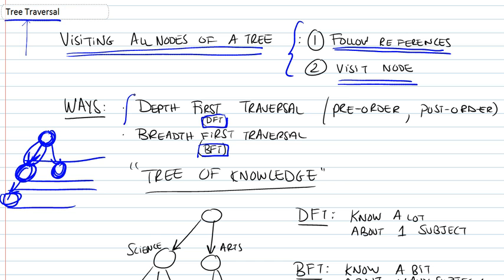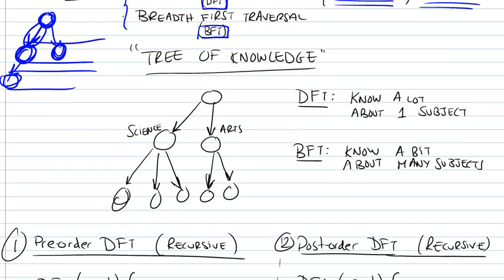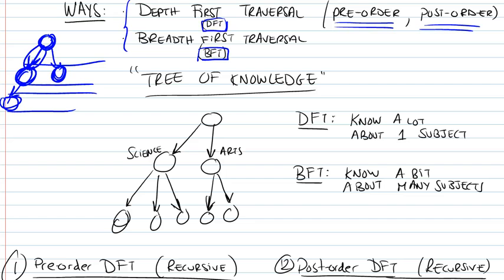In DFT, there are two ways to accomplish it: pre-order and post-order, and we're going to look at exactly what they mean. Just to give an example of tree traversal and the distinction between DFT and BFT...